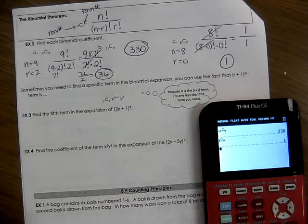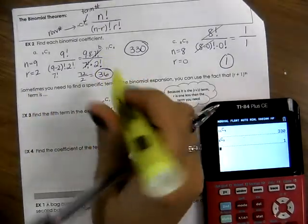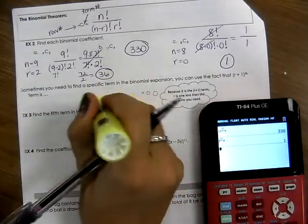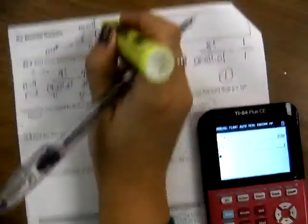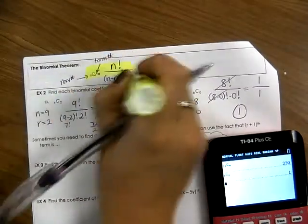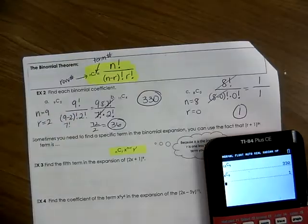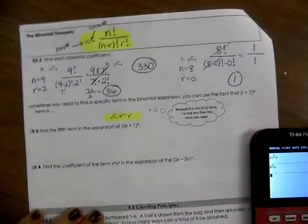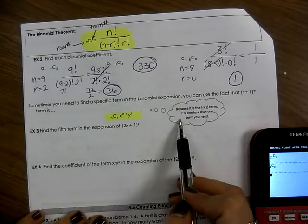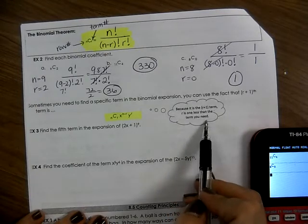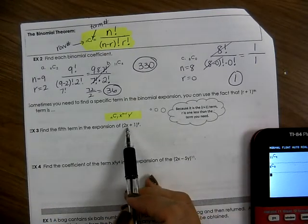The formula is NCR times X to the (N minus R) times Y to the R. You need to memorize that — it won't be given to you. Also remember that because it is the R plus 1 term, R is 1 less than the term you actually need.